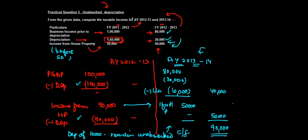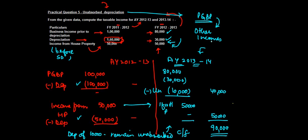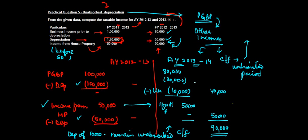The rules for setting off unabsorbed depreciation are: first, set it off entirely against profits and gains of business and profession. Anything left is set off against other incomes where set-off is permissible — in this case, house property income. If something still remains, it is carried forward for an unlimited period. In the next year, it is added to the usual depreciation and deducted.